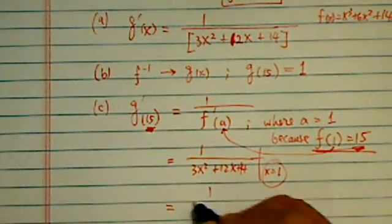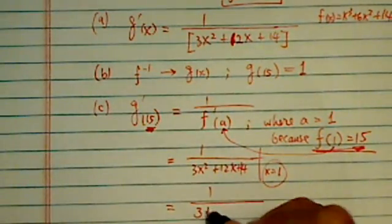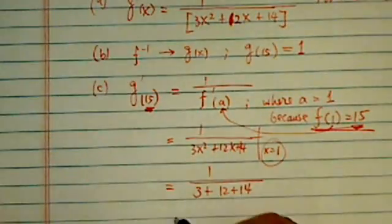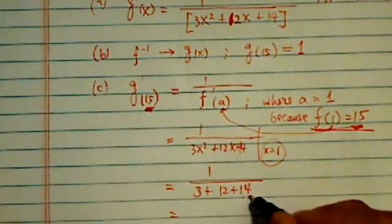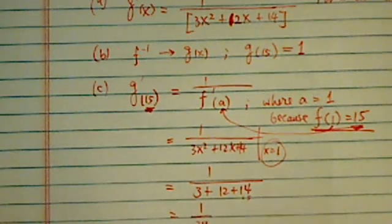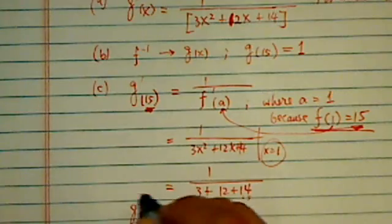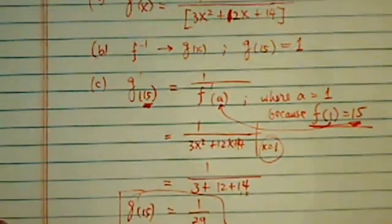Once we have this one figured out, this is pretty easy: 3 plus 12 plus 14. This is 15, so it's 29 on the bottom and 1 on top. So g'(15) here is actually equal to 1/29.